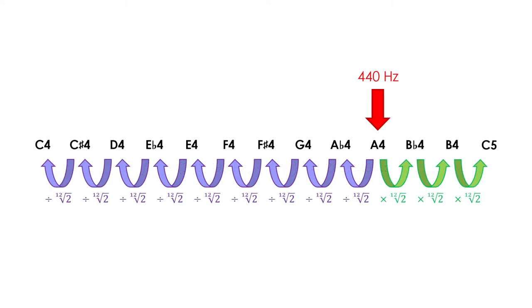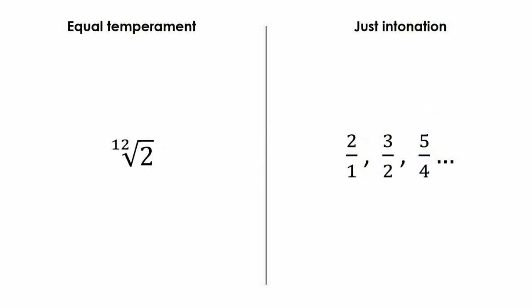As I mentioned before, the combination of A4 equals 440 Hz and equal temperament is the current tuning standard. However, there have previously been other tuning systems that define the intervals in a way different to equal temperament. Typically, these tuning systems define intervals with fractions rather than powers of the 12th root of 2, and are known as just intonations. This gives us slightly different frequencies than those of equal temperament, so one system may sound out of tune compared to another.